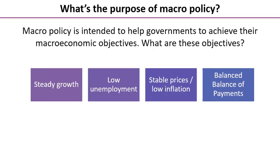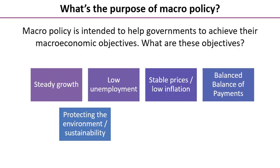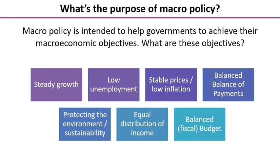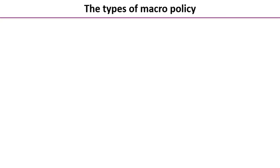Those are the four main macroeconomic objectives, but most governments now — particularly in developed economies — tend to think about another three in addition. These are: protecting the environment and thinking about sustainability; equal distribution of income and also possibly wealth; and finally, having a balanced budget — in other words, government spending in a year equalling the tax revenue in a year.